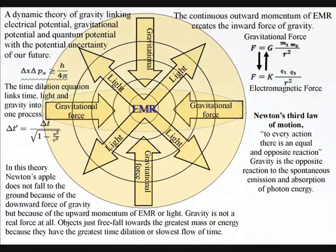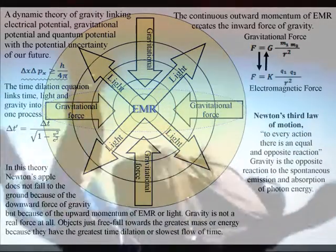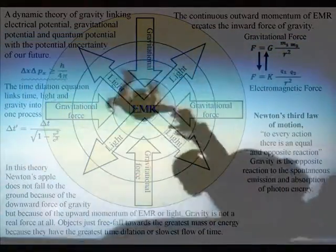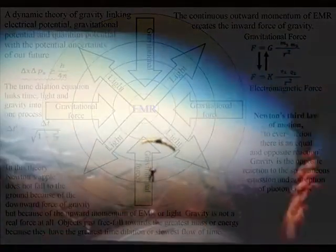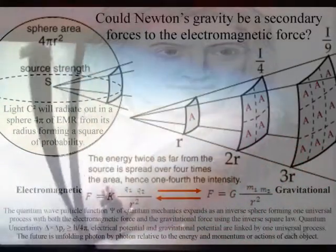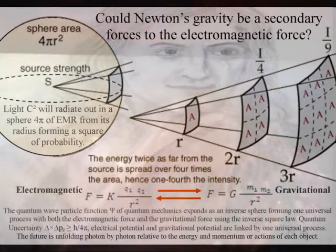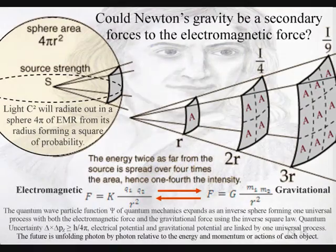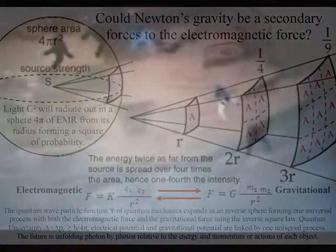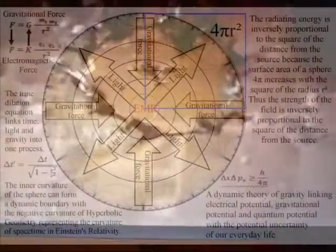For this process to be totally universal, gravity has to be linked to the probability of quantum mechanics and the uncertainty of everyday life. One of the great misconceptions of science is that mass is the source of gravity, but this is not so — energy and momentum are the source of gravity. This theory takes this to its logical conclusion, explaining gravity as a secondary force to the electromagnetic force. This can be seen mathematically with both the electromagnetic force and the gravitational force sharing the inverse square law. In this theory Newton's apple does not fall to the ground because of the downward force of gravity, but because of the upward momentum of electromagnetism or light. Gravity is not a real force at all.